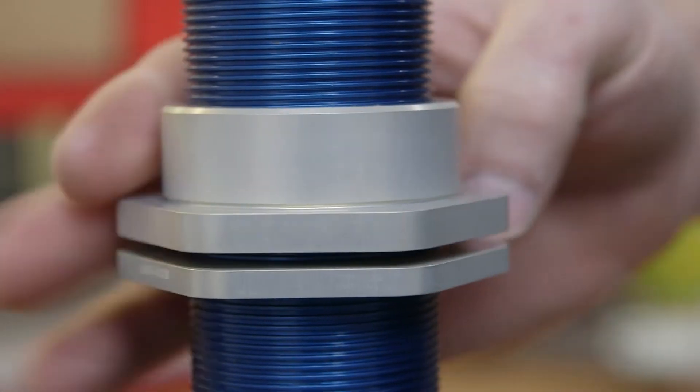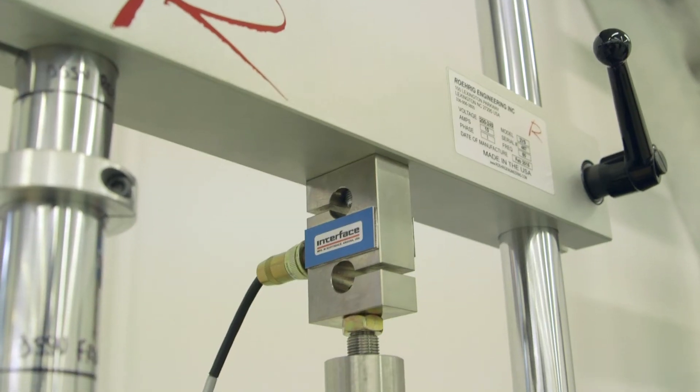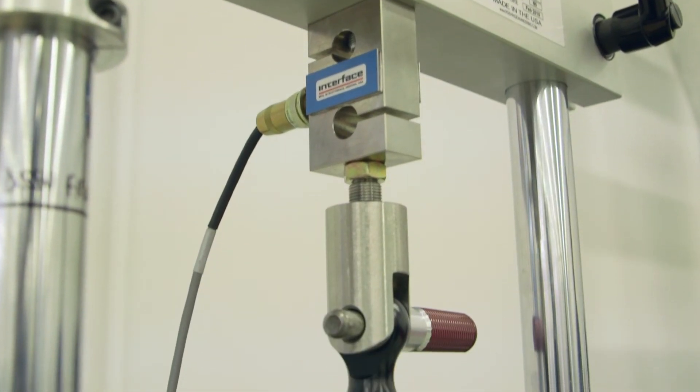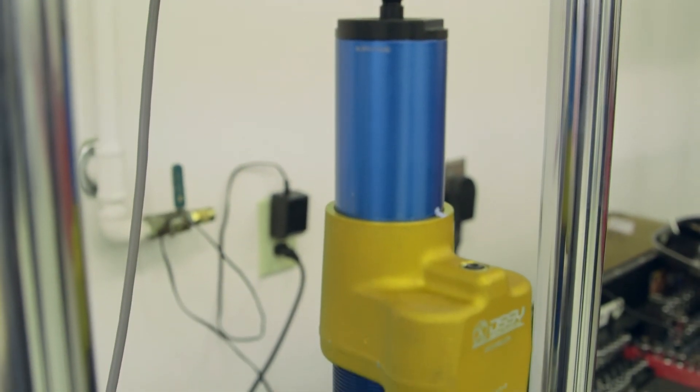Another nice feature of the dynamic dampers is the spool valve technology. As shown on the shock dyno, when compared to older style dampers, the dynamic damper provides a linear curve all the way through the adjustment range.